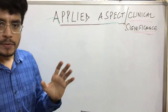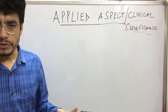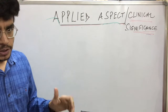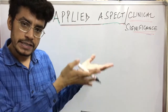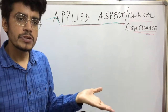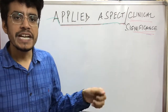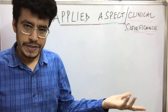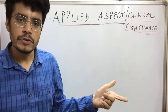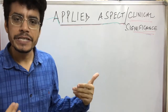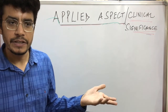Now coming to upper motor neuron lesion and lower motor neuron lesion. Upper motor neurons include all the pyramidal and extrapyramidal tracts. Lower motor neurons are the anterior horn cells — the alpha motor neurons and the gamma motor neurons.